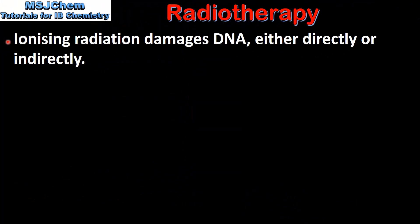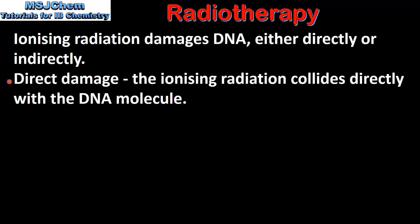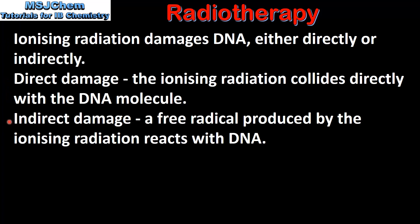Ionizing radiation damages DNA either directly or indirectly. With direct damage, the ionizing radiation collides directly with the DNA molecule. In indirect damage, a free radical produced by the ionizing radiation reacts with DNA.